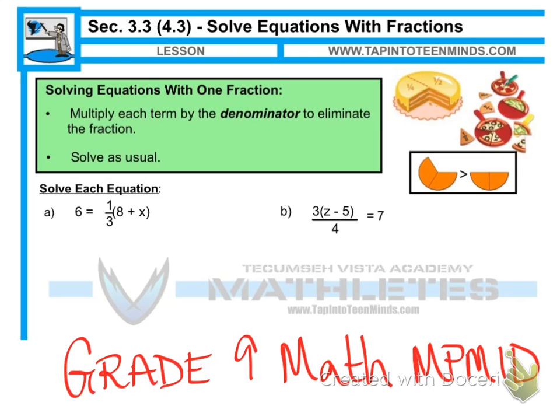So we'll start off by mentioning that first off, one of the easiest ways to solve an equation like this is to eliminate the denominator. Remembering that a denominator, or a fraction for that matter, like in question A, we have one-third. So we have essentially one-third of that particular bracket, 8 plus x.